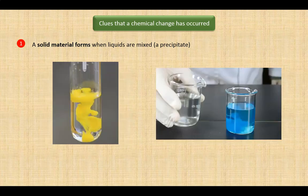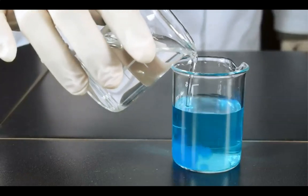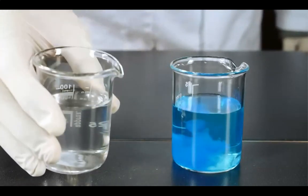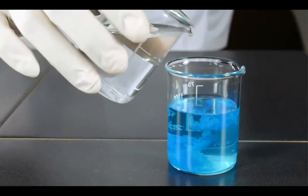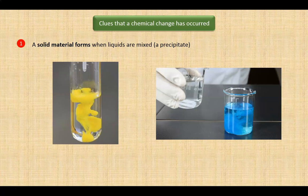In this clip, a blue solution of copper sulfate will be mixed with colorless solution of sodium hydroxide. The result is a jelly-like solid known as a gelatinous precipitate. It's a very soft solid.